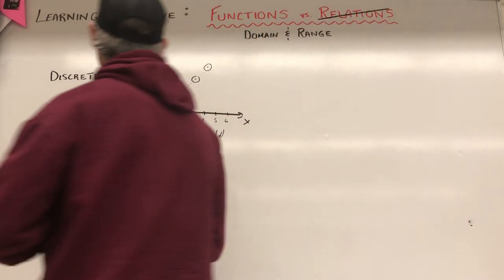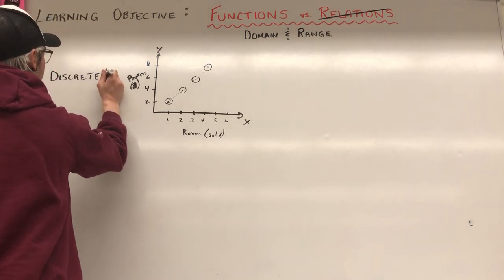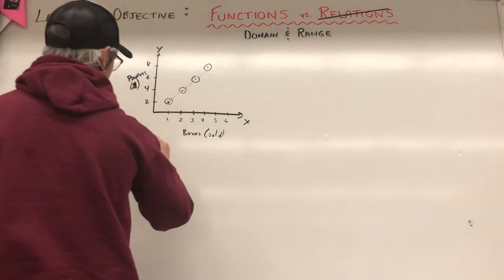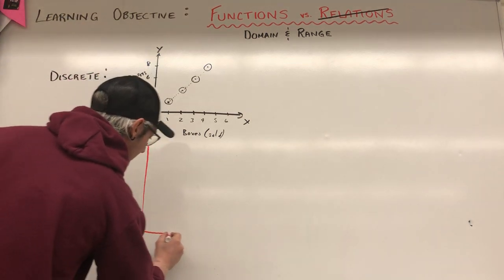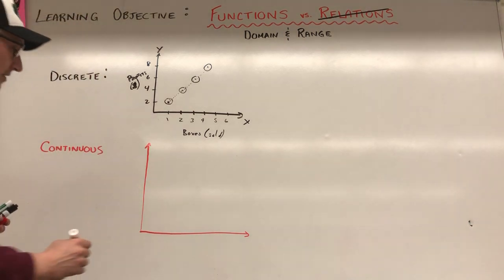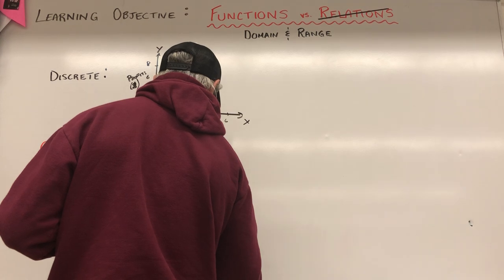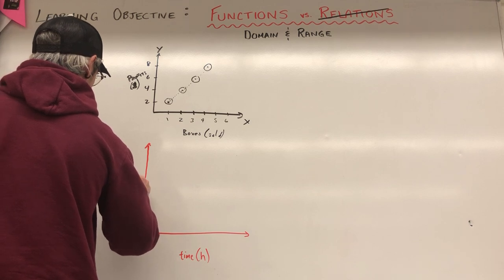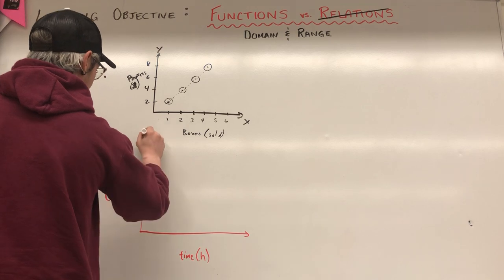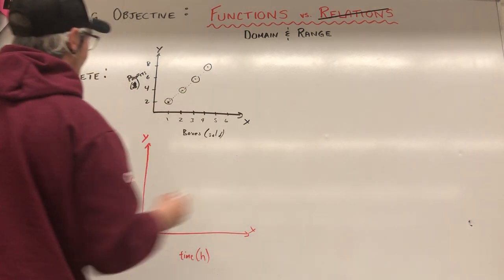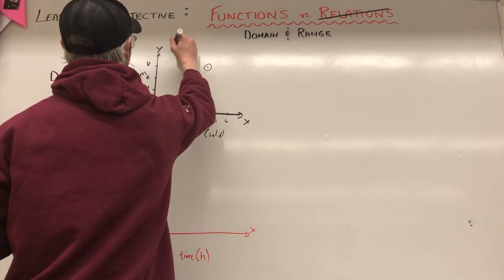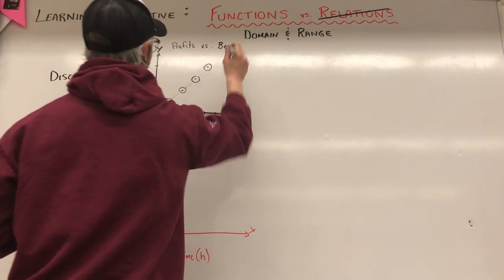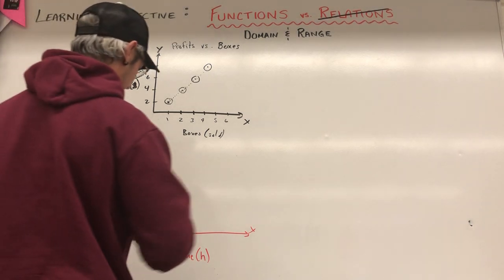The other situation is continuous data. We need to know discrete versus continuous for when we're doing domain and range. A good example of continuous data: if I was to track time driving in hours and the distance I've traveled in kilometers. So my graph has the title 'Distance as a Function of Time.'